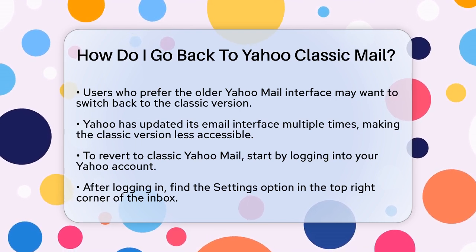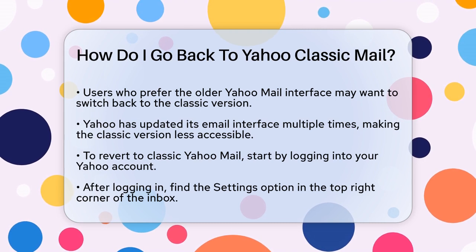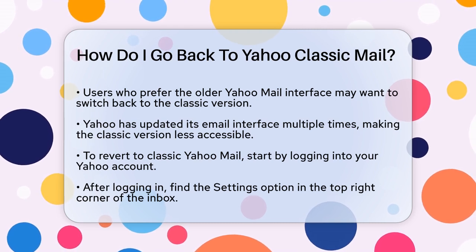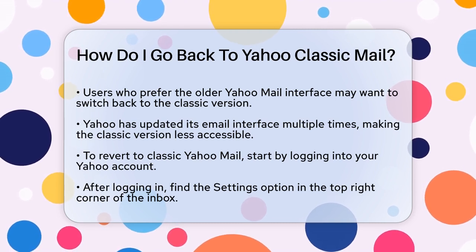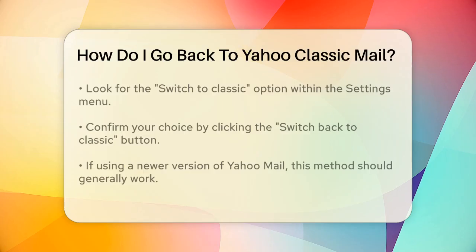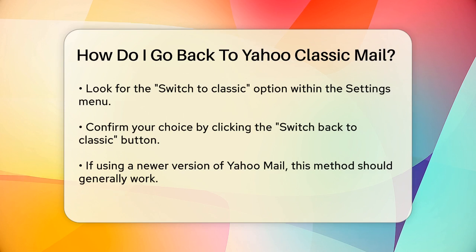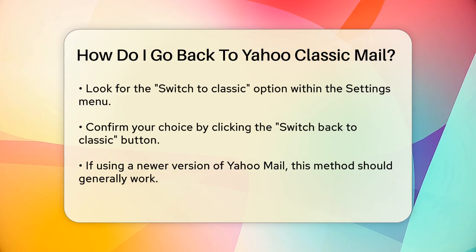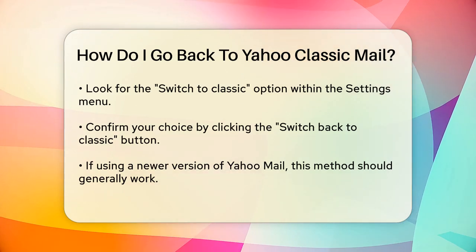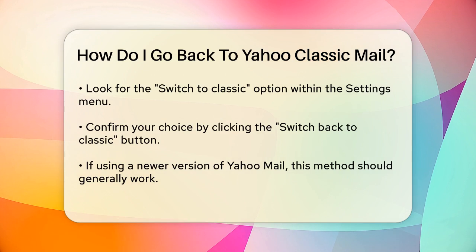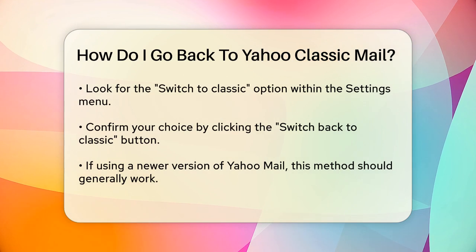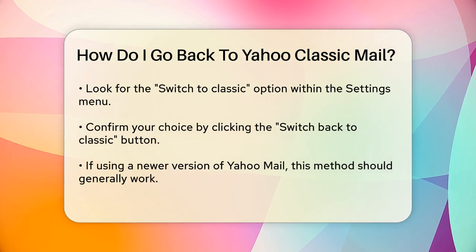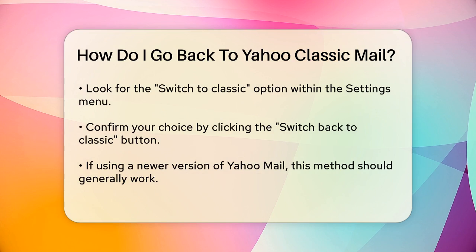Step 2: Access Settings. Once you're in your inbox, look for the Settings option, usually located at the top right corner of the page. Step 3: Switch to Classic. Click on the Settings option, and then look for the Switch to Classic option. This might be under a drop-down menu or a separate section.